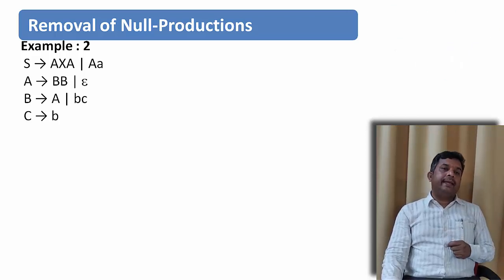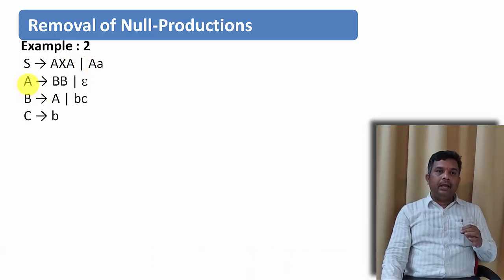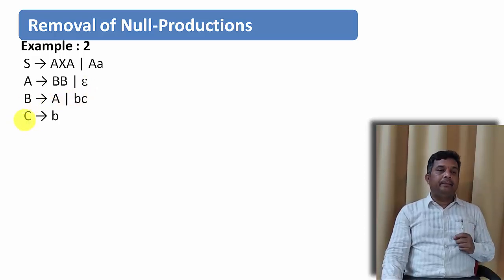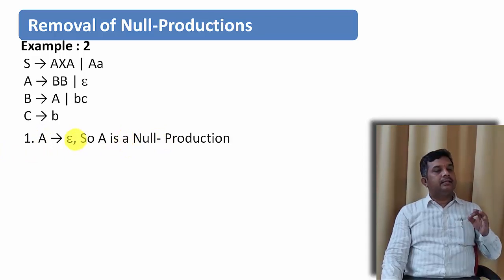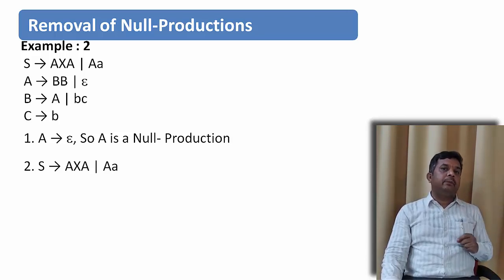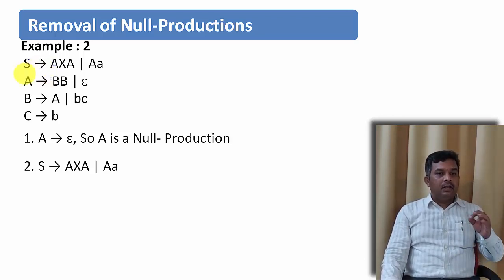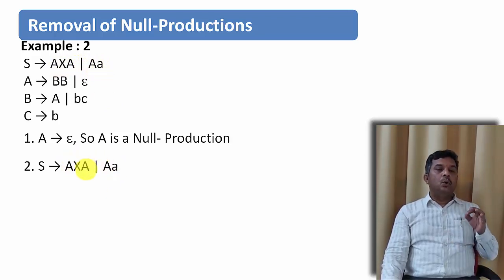Let us take one more example. Given: S derives AXA or AA; A derives BB or epsilon; B derives A or BC; C derives B. There is only one null production: A derives epsilon. So A is a nullable variable. We check all productions where A appears on the right-hand side. For S derives AXA, the nullable variable A is present.